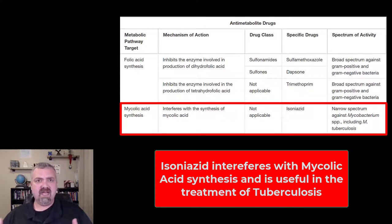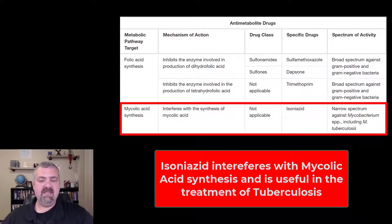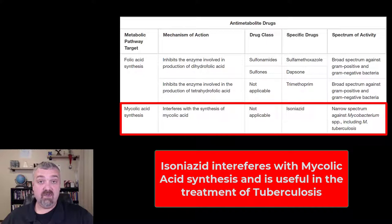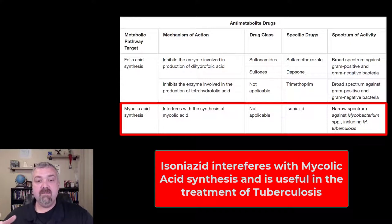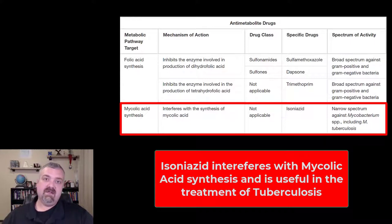Number one: treatment time is a long time — six months or longer if you're treating TB or latent TB; six, nine, twelve month treatments. The reason for that is bacteria become really vulnerable when they divide, when they're making new cell walls or producing protein so the cells can divide. But mycobacteria are really slow-growing organisms, so they don't divide quickly, and any given day you're not going to kill that many of them. That's why the treatment time is really long.